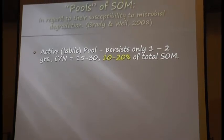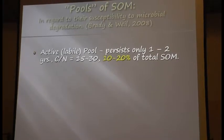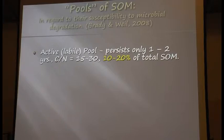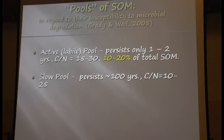This is from the textbook 'Nature and Properties of Soils' by Brady and Weil — I'd highly recommend it for anybody interested in sustainable agriculture management. These authors say the active fraction is only 10 to 20 percent, and that fraction persists in the soil for only one to two years.